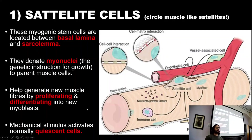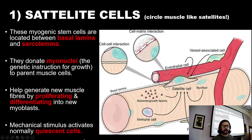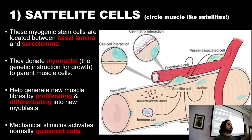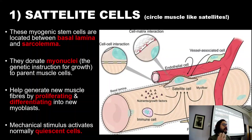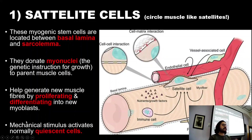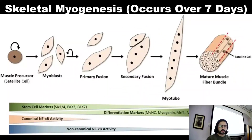Normally, satellite cells are quiescent, meaning they are not activated at rest. When we go to the gym, we provide a mechanical stimulus to the muscle through lifting weight. As soon as that load goes through the muscle and is transduced, these cells become activated and begin the process of skeletal myogenesis.